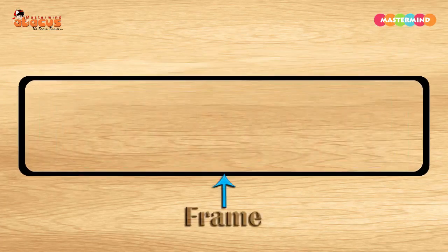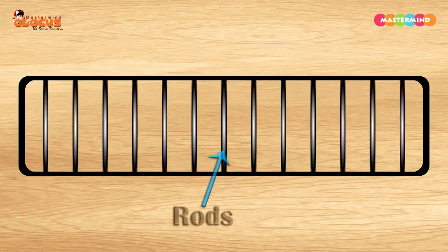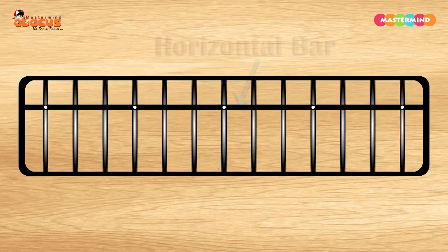This is the outer frame of Abacus. It has rods. The frame is divided by the horizontal bar in two parts.